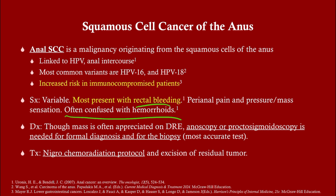A big problem is confusion with hemorrhoids — always bear that in mind. Look for relevant history such as diagnosed HPV or frequent anal intercourse, which raises risk. This is fairly low-yield for exams, but know it should be on your differential. It is typically appreciated grossly or on digital rectal examination, but because cancer is a concern, diagnosis must be confirmed visually and by biopsy, which is the most accurate test. Treatment is chemoradiotherapy — know the term Nigro chemoradiation protocol.